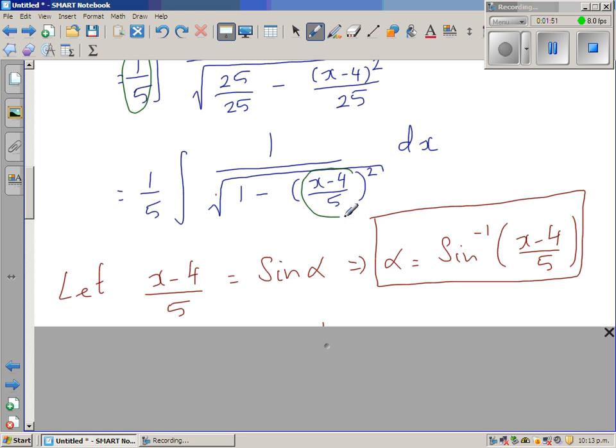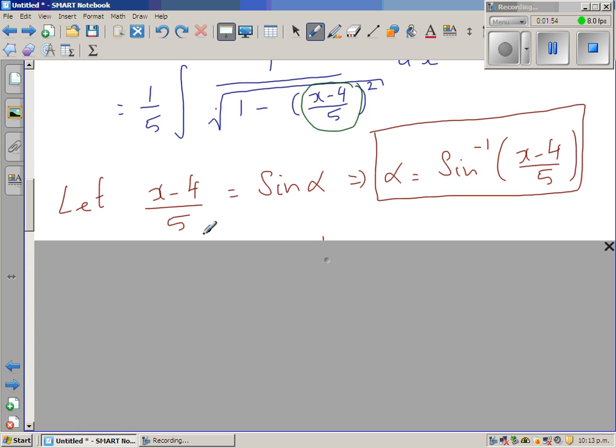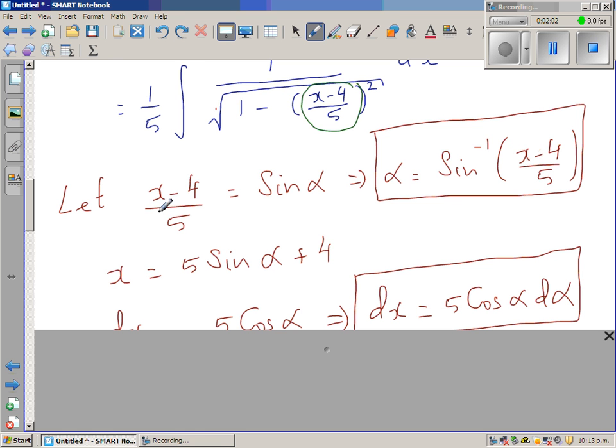Inside the bracket x minus 4 over 5 is sin alpha. So if you make alpha the subject, that is sin inverse of x minus 4 over 5. And if you make x the subject, it is 5 sin alpha plus 4.